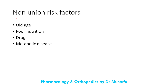Non-union risk factors include old age, as older individuals have a higher risk. Poor nutrition is also a risk factor. Several drugs decrease fracture healing and may lead to non-union or malunion — these include steroids, non-steroidal anti-inflammatory drugs (NSAIDs), proton pump inhibitors, and selective serotonin reuptake inhibitors (SSRIs). Metabolic bone disease also leads to non-union.